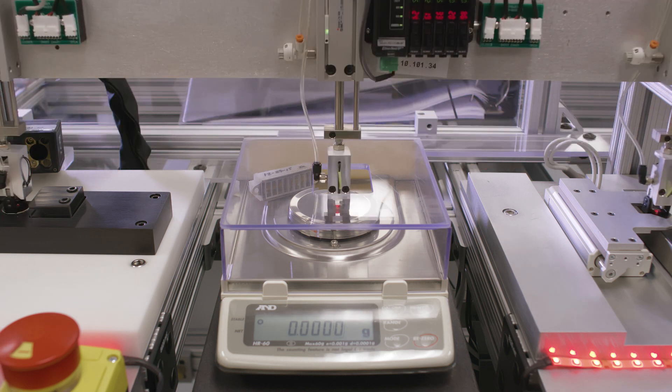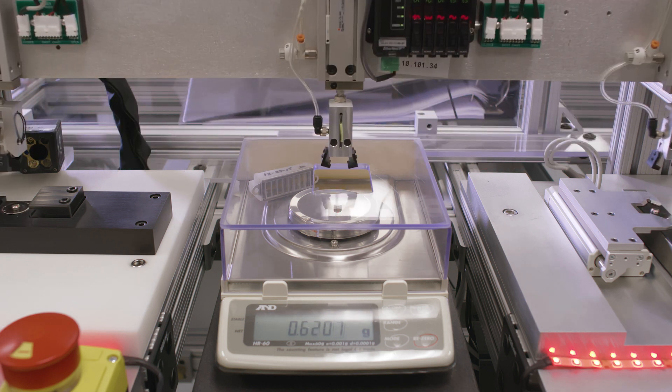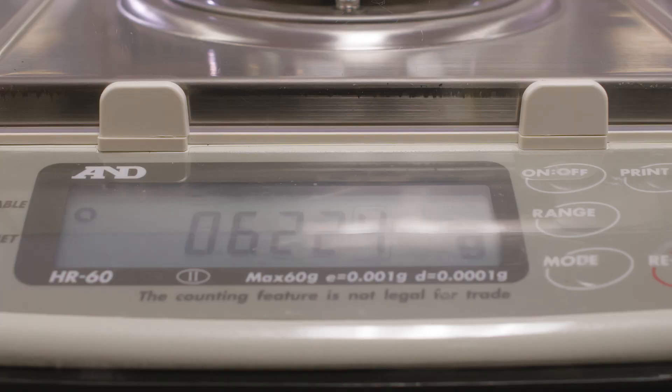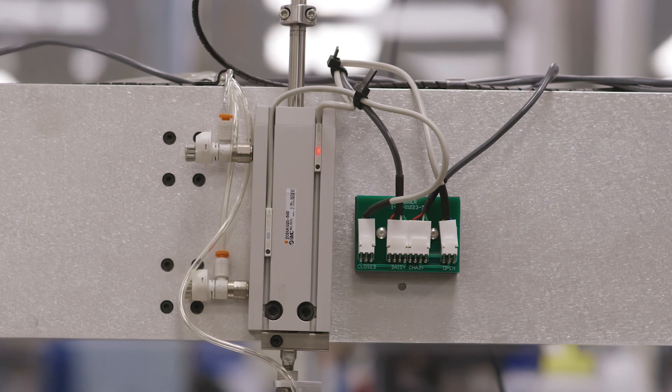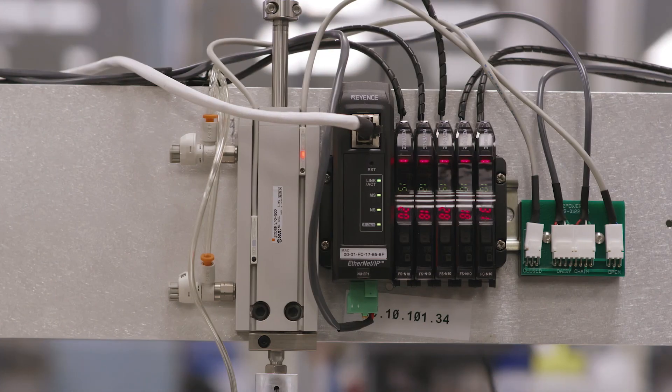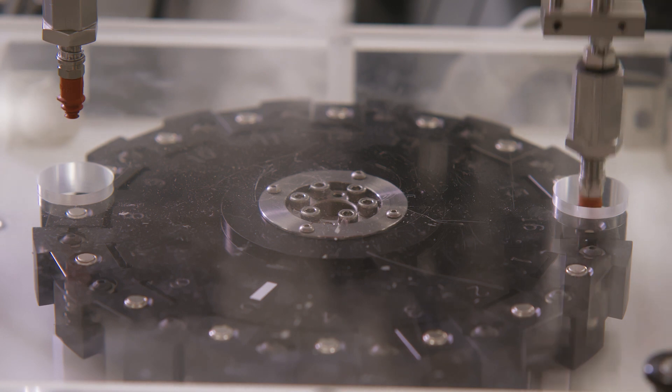The line will automatically reject a cell if it does not meet predetermined specifications or if all the upstream data for that cell is not collected in specification. The cell then travels to a wash station and then into a centrifuge station which spins the cell at a high RPM to prepare the cell for formation and grading.